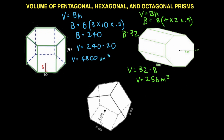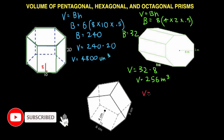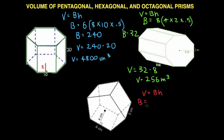Let's move on to our pentagonal prism. Volume equals big B times height. Big B is going to be 5 this time because there are 5 sides and 5 triangles can be made out of it. So 5 times our apothem which is 4, times 6, and then we multiply that by 0.5.